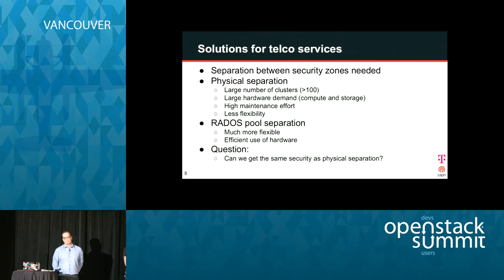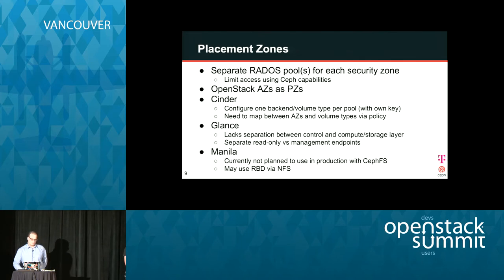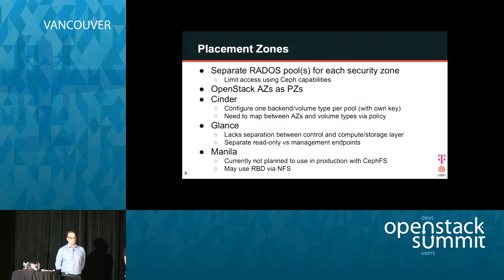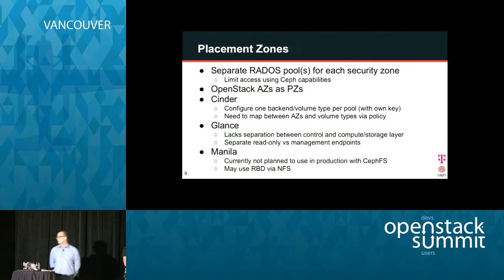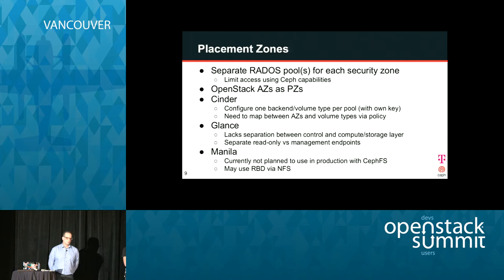The real question for our security department is: will pool separation provide the same security as physical separation? The idea is to have for each security zone its own Rados pool and limit the access to these pools depending on the security and key management available in Ceph itself. On the OpenStack side, we would use availability zones to build these placement zones. For Cinder, we plan to use a separate back-end for each pool with its own authentication key to provide the zone.